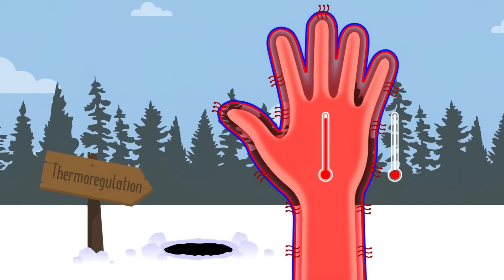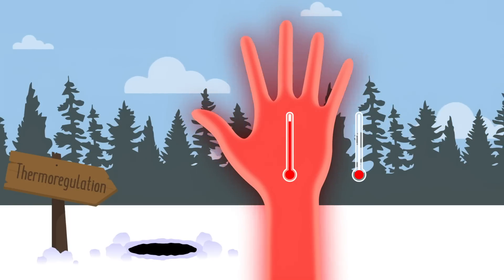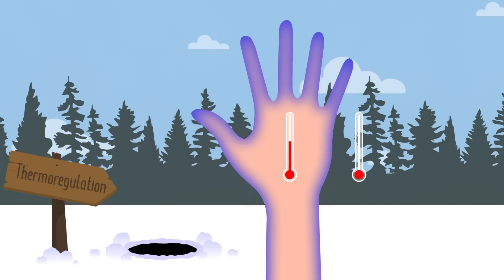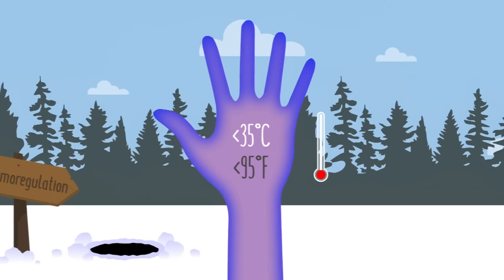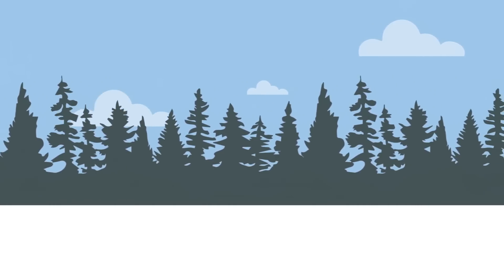However, if the air is just too cold or you're exposed to it for just too long, your body may not be able to keep up. This can result in frostbite, where your tissues begin to freeze. And eventually, if your core temperature drops below 35 degrees Celsius, even hypothermia, both of which are potentially very dangerous conditions. In fact, here in Canada, more than 80 people die from cold exposure every year.